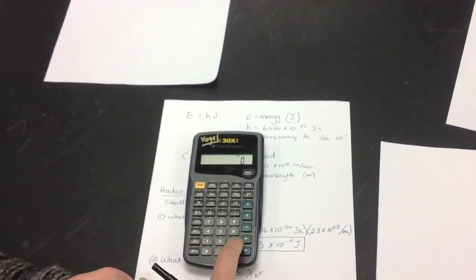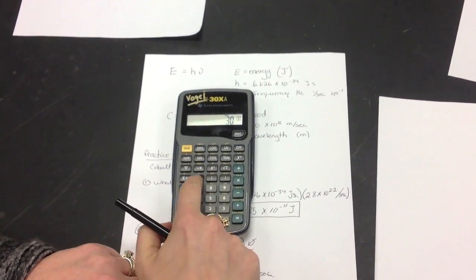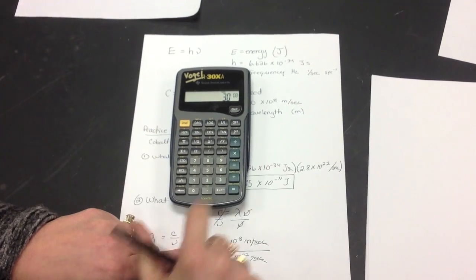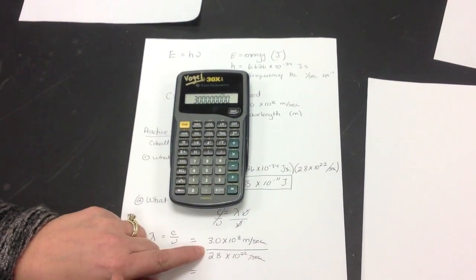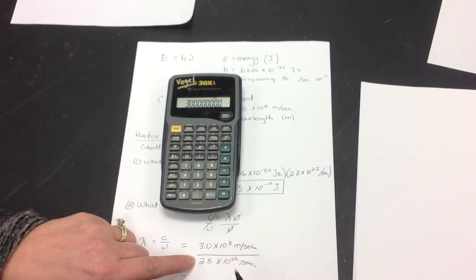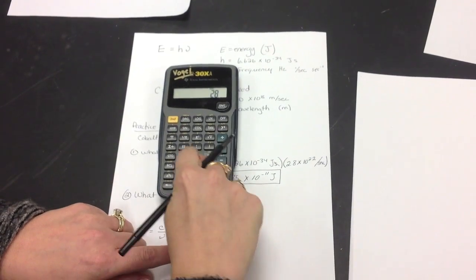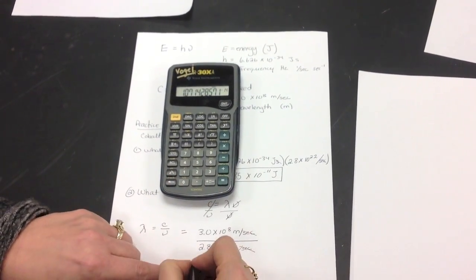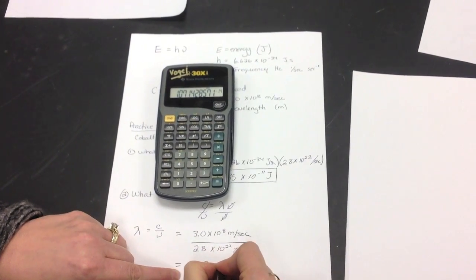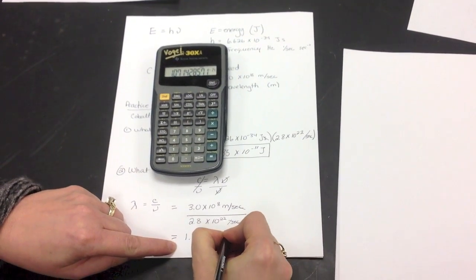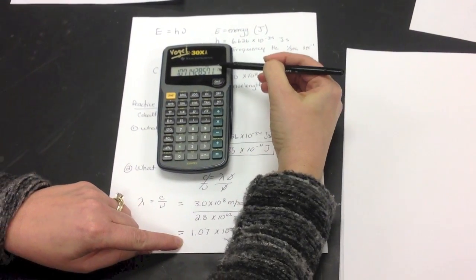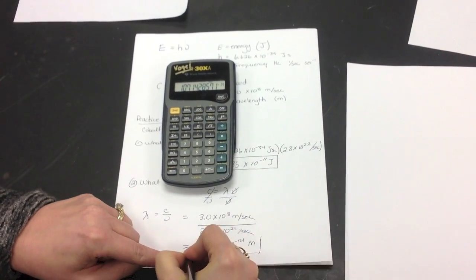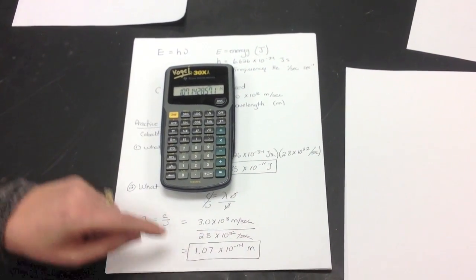Now, we're going to do this the same way, 3.0 EE 8, divided by, now sometimes it'll just switch directly into non-scientific notation. That's okay. 2.8 EE 22 equals 1.07 times 10 to the negative 14. Now, notice it doesn't say times 10, but you understand that when it's written like that, that's what it means, meters.